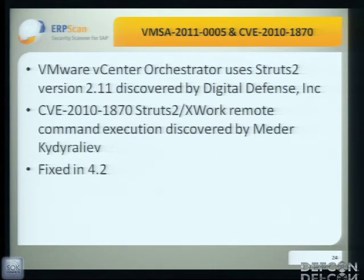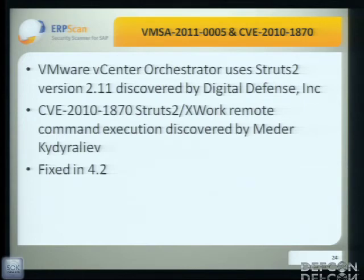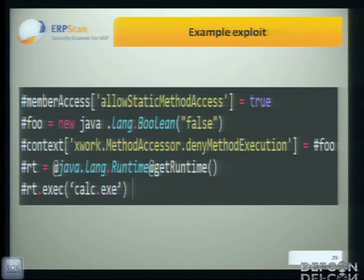There was another way we didn't find during our penetration testing, but I think it's a very interesting bug. It was discovered by guys from Digital Defense. They found that vCenter Orchestrator has an old Struts library, and that library has a remote code execution bug discovered by Meder. It was a bug in handling OGNL expressions. OGNL is a language for setting and getting Java properties, and each HTTP parameter is treated as an OGNL expression. You could just bypass this using a Unicode hash sign and execute any Java code. This is an example of the exploit — you just insert this code in a GET request and get remote code execution.